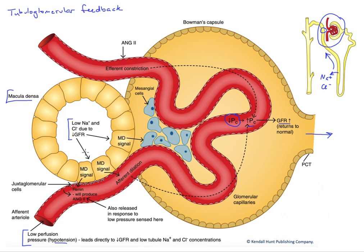In addition to that mechanism, this low sodium and chloride in the macula densa will also stimulate the production of renin. Renin is an enzyme secreted by juxtaglomerular cells — cells in the wall of the afferent arteriole. In addition to the macula densa signal, renin secretion is also stimulated in response to low blood pressure in the afferent arterioles. Essentially the afferent arterioles act as a baroreceptor, so low pressure leads to increased renin secretion.